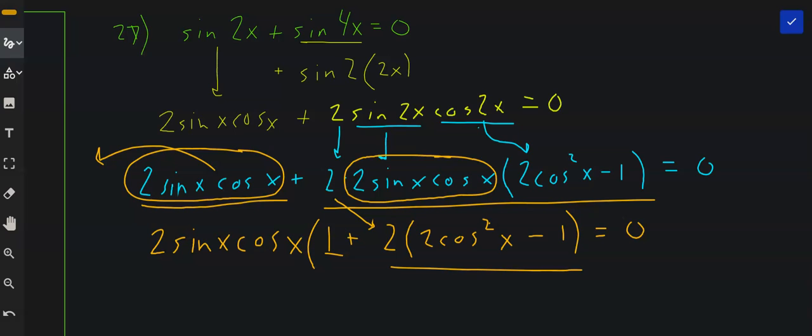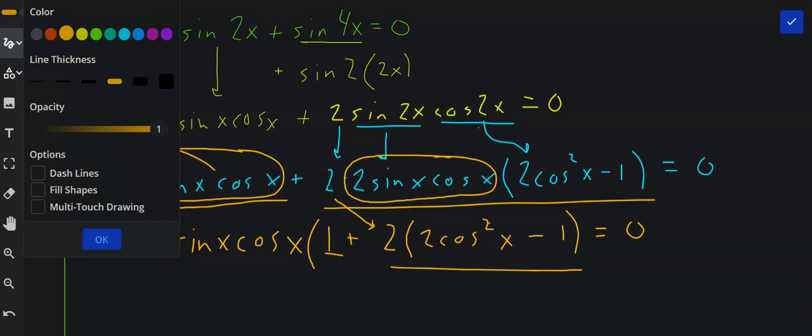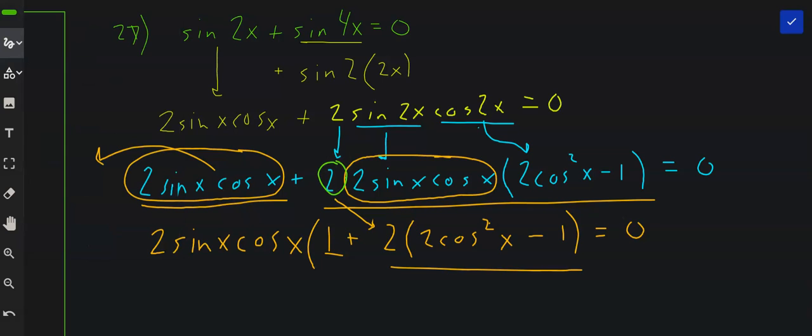The second term will be this times this. Technically, we now have it in factored form. We can set the 2 factors equal to 0 and solve.